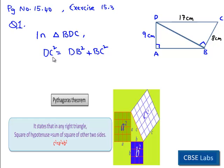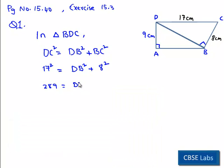Now we have DC as 17 centimeters. So here we have 17 square, and DB which is unknown, and BC is equal to 8 centimeters, which is 8 square. Now we know that 17 square is 289, DB square is unknown, and 8 square is 64.